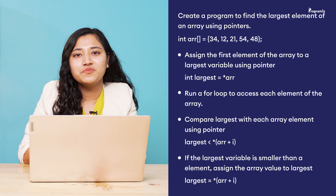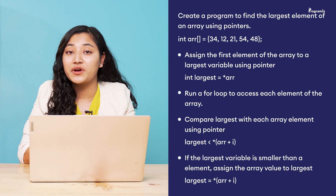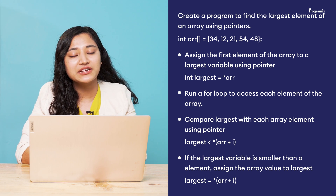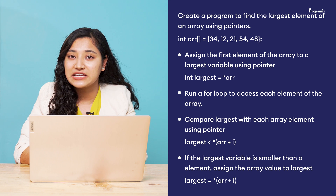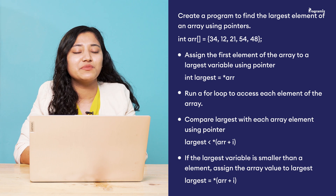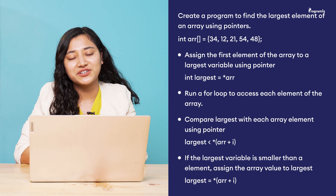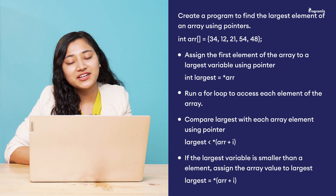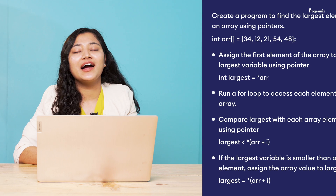Now to revise what you've learned, here is a programming task: create a program to find the largest element of an array. First, create an array with elements 34, 12, 21, 54, and 48. Then assign the first element of the array to a 'largest' variable — use a pointer. Run a loop to iterate through each array element, comparing the 'largest' variable with each element using a pointer. If 'largest' is smaller than the current element, assign that element to 'largest' using pointers. Finally, print the largest variable. You'll find the answer in our GitHub repository — the link is in the video description.